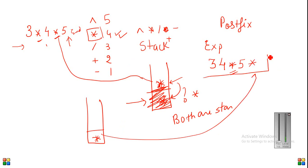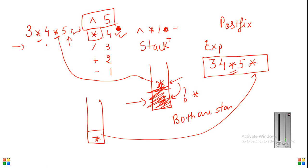The key point: you cannot have even equal-precedence operators stacked one above the other. The operator below the stack top must always be of strictly lower priority — not equal or higher. If you encounter something of equal or higher precedence, keep popping until you find a lower-priority element. For example, an exponent operator has the highest priority, so everything would be popped from the stack when an exponent is encountered.